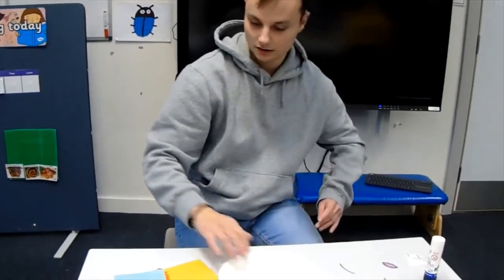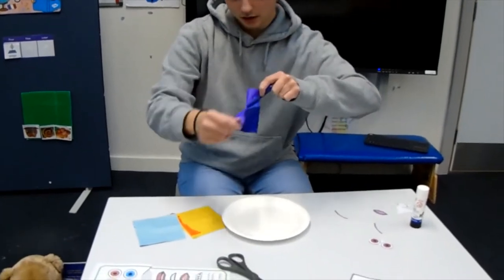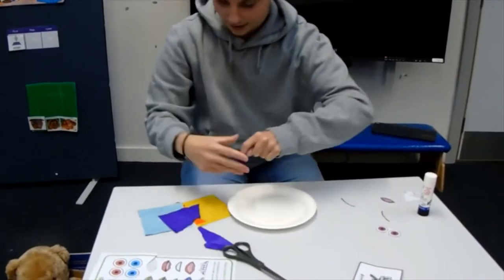We're going to start by ripping our tissue paper or paper up, lots and lots of different shapes. Just like that. There we go.